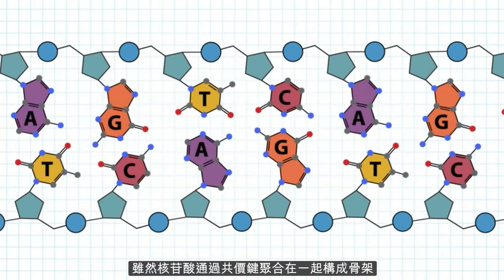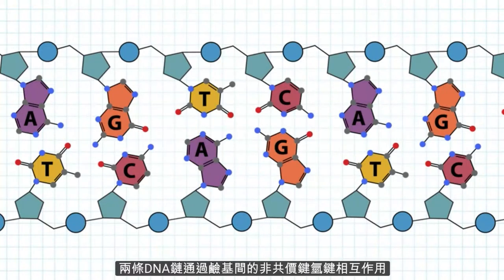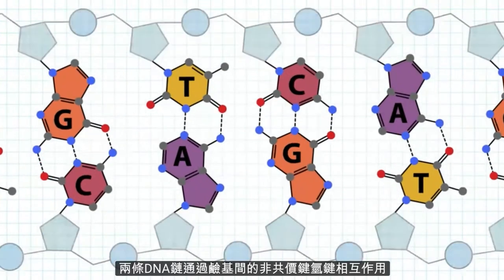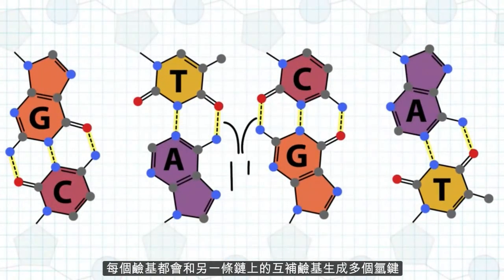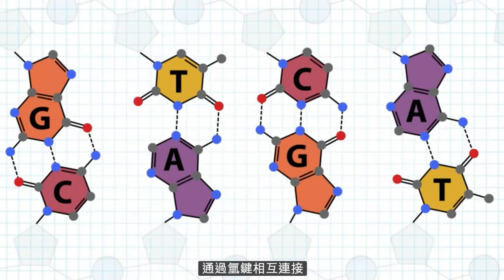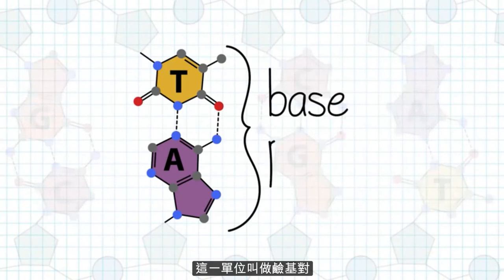Although the nucleotides come together through covalent bonds in the backbone, the two DNA strands interact through non-covalent hydrogen bonds between the bases. Each base forms multiple hydrogen bonds with its complementary base on the opposite strand. Bound together by hydrogen bonds, each unit is called a base pair.